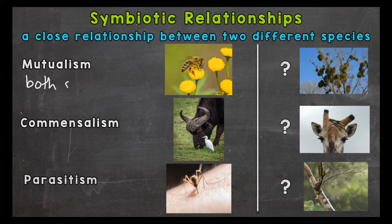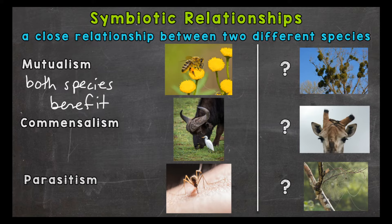In a mutualistic relationship both species benefit. Our example is the relationship between bees and flowers. The bee gets the nectar they need from the flowers and they use it to make honey. Bees travel from flower to flower collecting that nectar. As they travel between the flowers, bees collect pollen on their bodies and then spread that pollen between the flowers. This helps the flowers reproduce. So the bees get nectar and the flowers get pollinated — both species benefit.